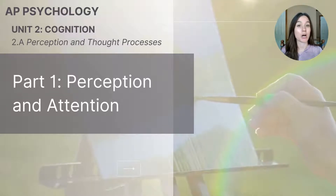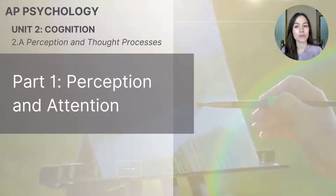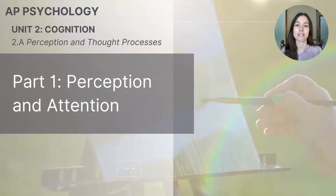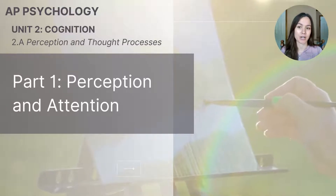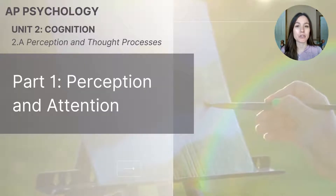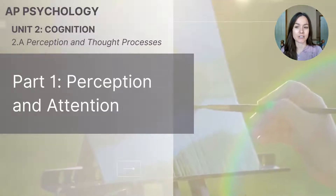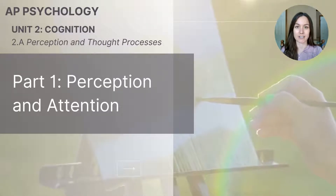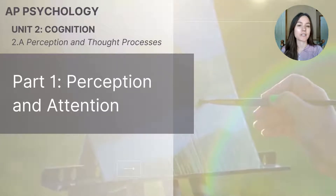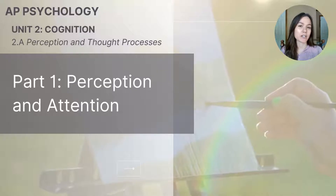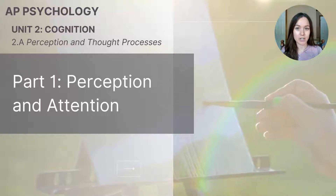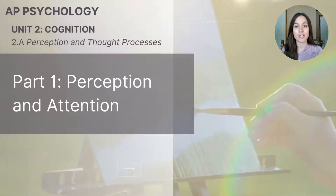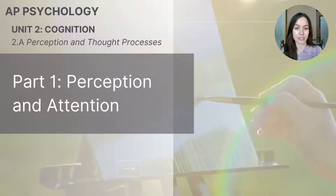Hi everyone! This video is part one of the 2A series titled Perception and Thought Processes from the Unit 2 Cognition Series for AP Psychology students. This video lesson focuses specifically on two aspects of cognition: perception and attention.